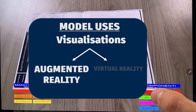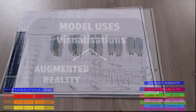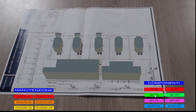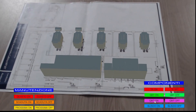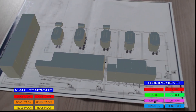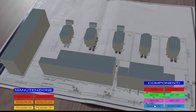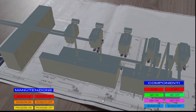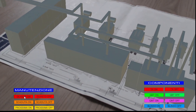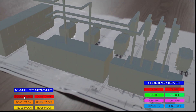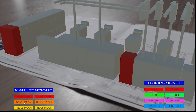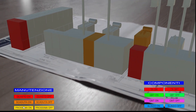By capturing a target image with a mobile device, the components in the plant can be visualized in augmented reality. In addition, the color filters described during scheduled maintenance can be activated.